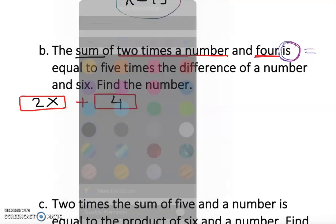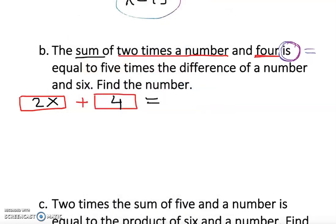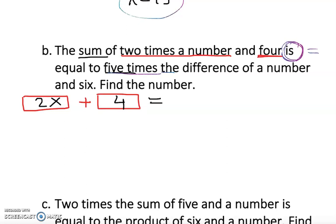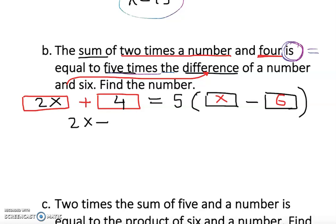This is going to be is, which means equal, so we're going to do an equation. Five times the difference. Look, five is outside, so we need something here. Five is outside. Times means multiplication. We have more than one, so there's a difference. We have one number here minus another number here. Difference of a number and six—a number is x and six. And tells you that you're going to subtract. We structured it right. Now I can say it's going to be 2x plus 4 equal to 5 open parentheses x minus 6.